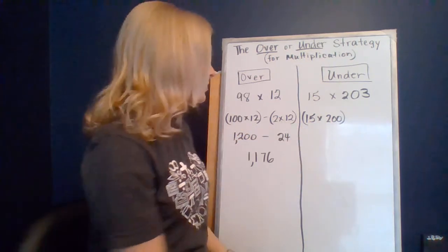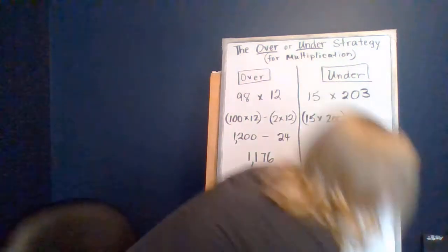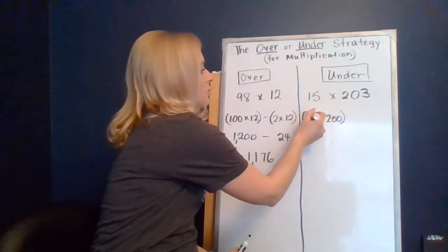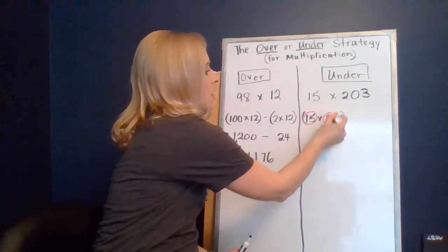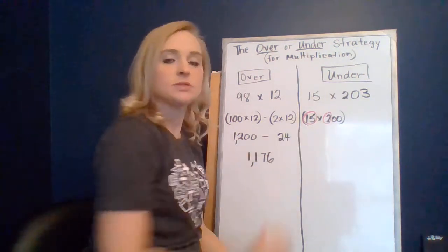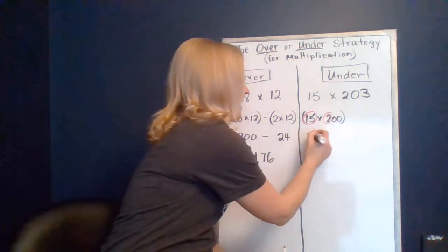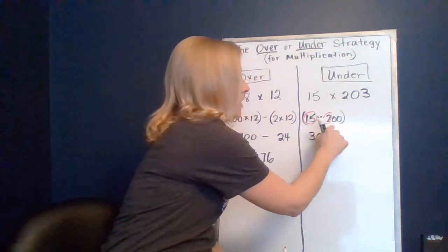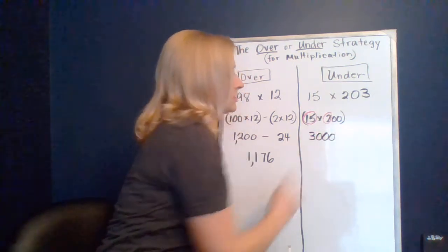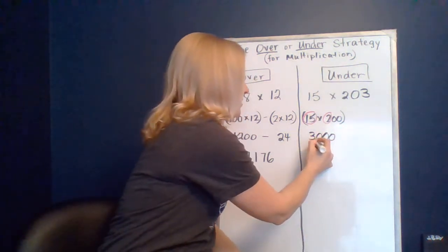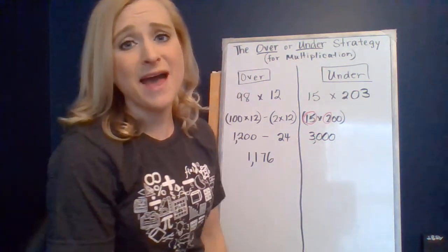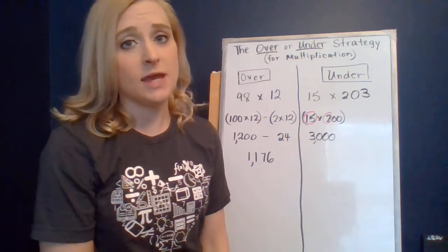You can think about the non-zero factors: 15 times 2 is what? 30. And then we have two powers of 10, so that's hundreds, 3,000.